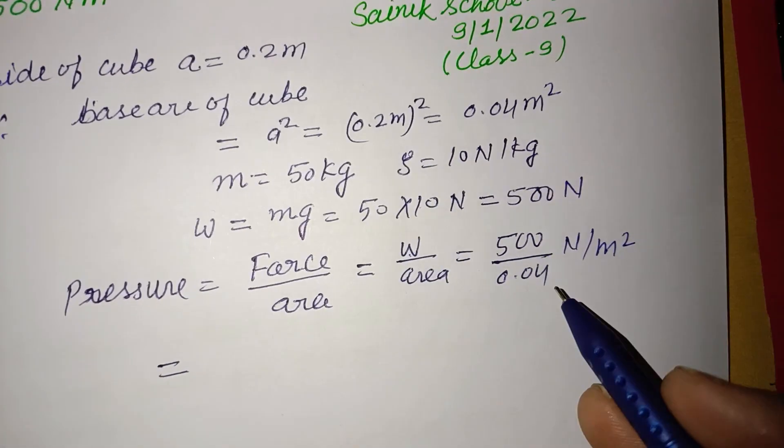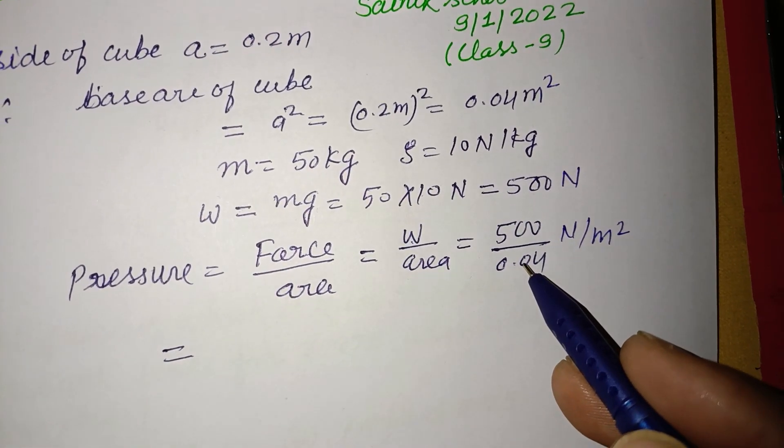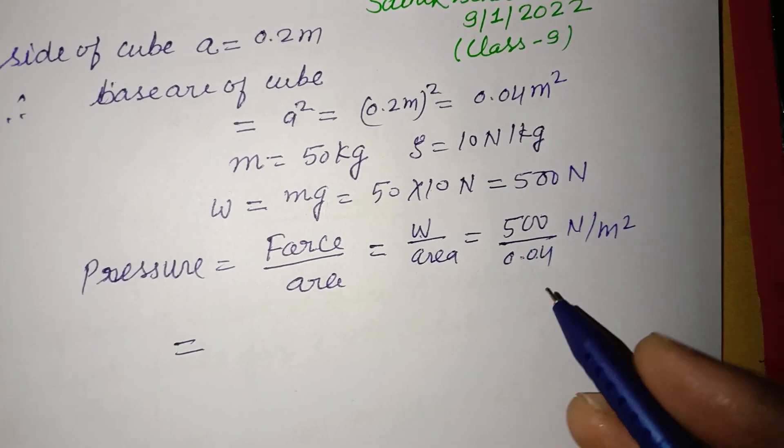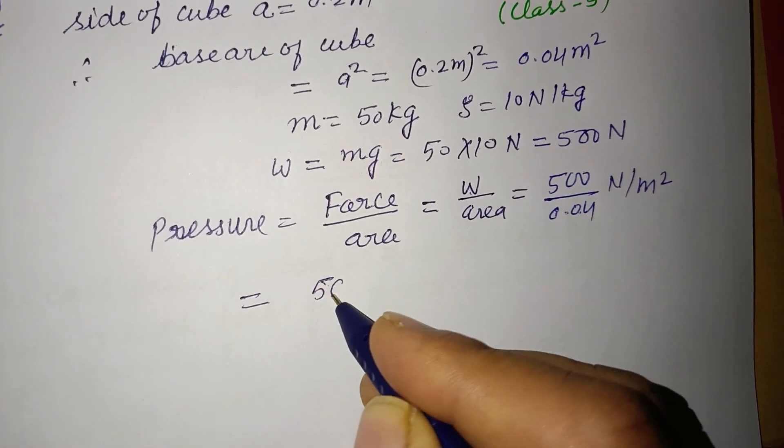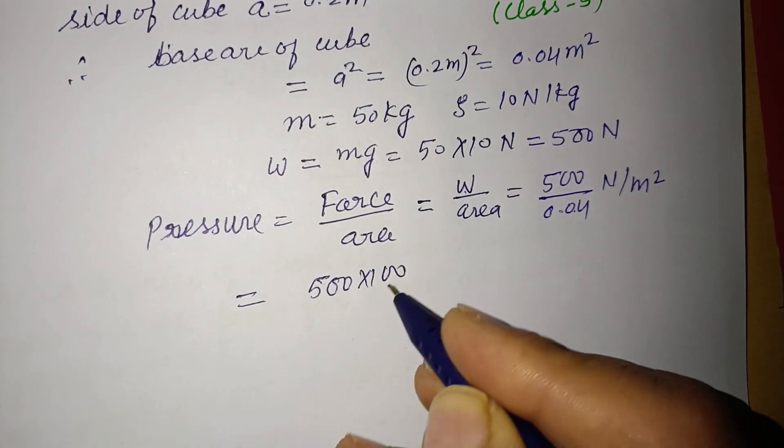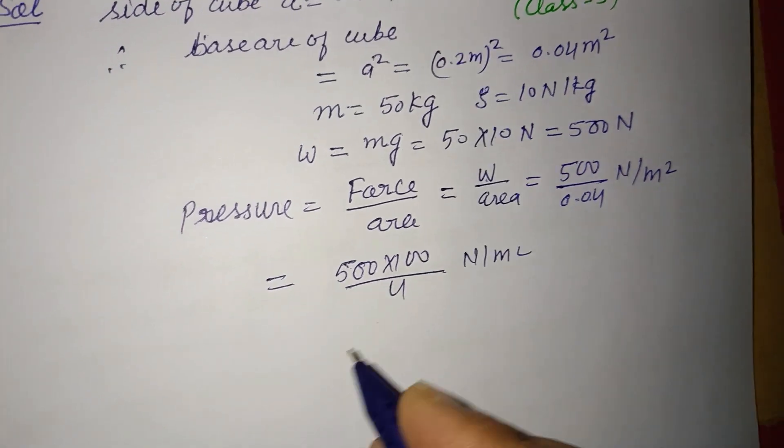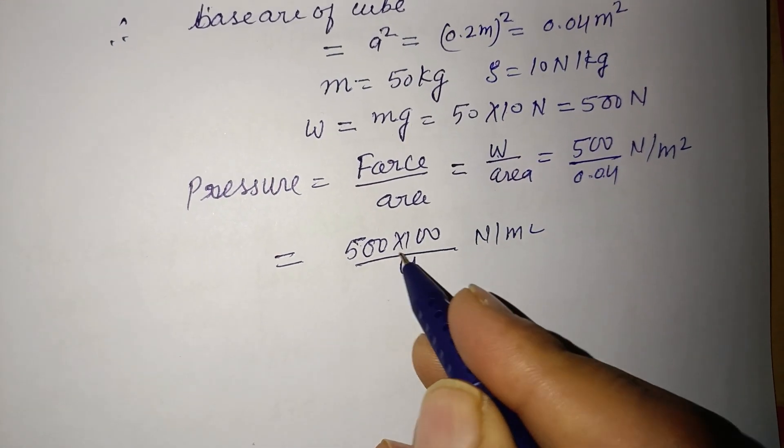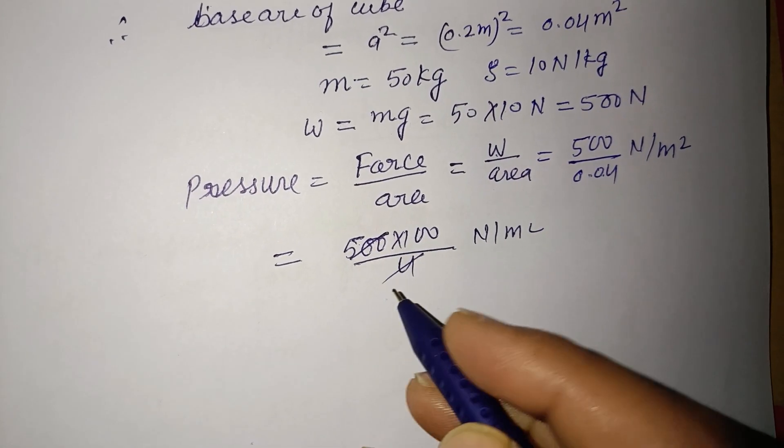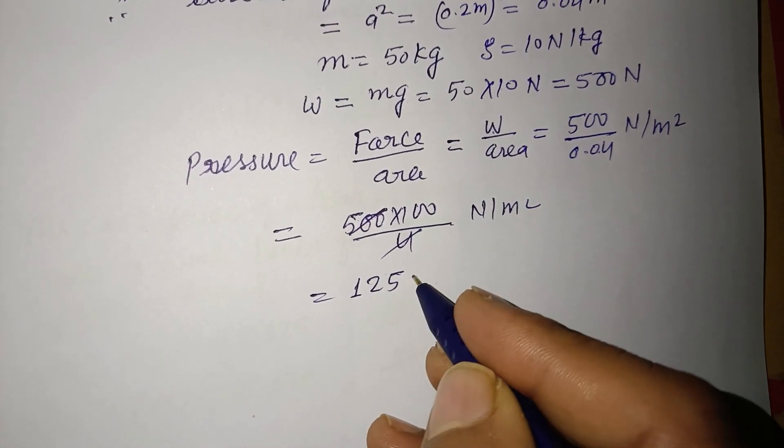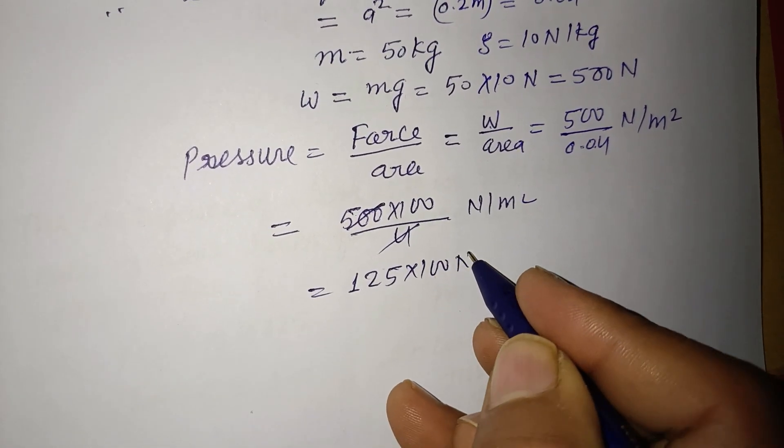We remove the decimal point, so we multiply numerator and denominator by 100. We get 50,000 over 4 newtons per meter squared. Now 500 divided by 4 is 125, times 100 equals 12,500 newtons per meter squared.